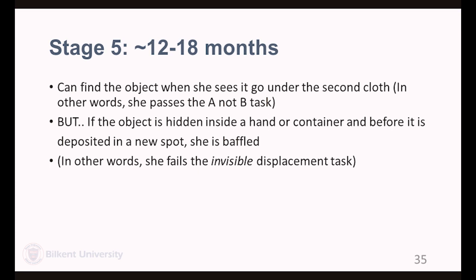At substage 5, infants can find the object when they see it go under a second cloth. This is called the invisible displacement task.